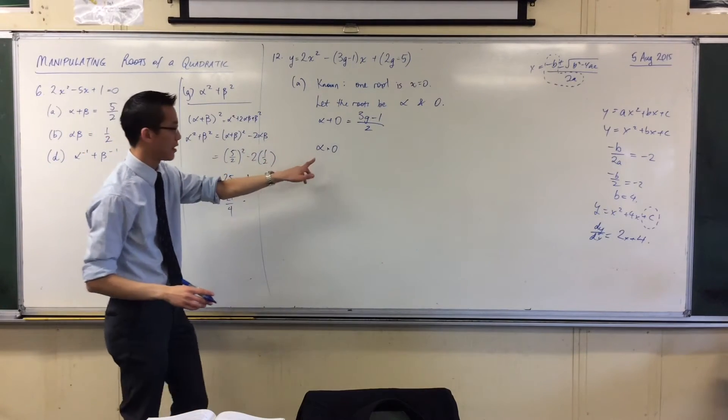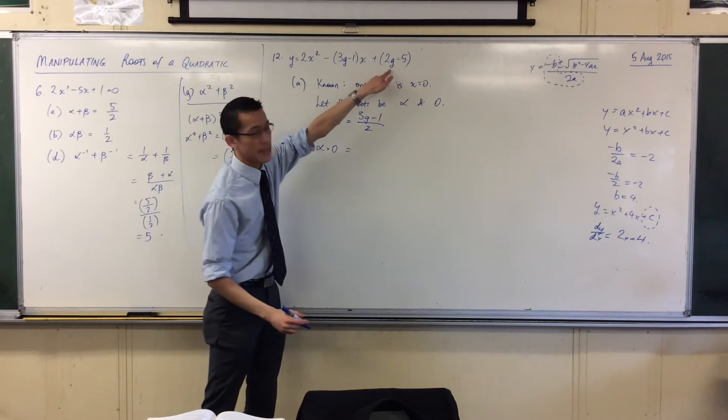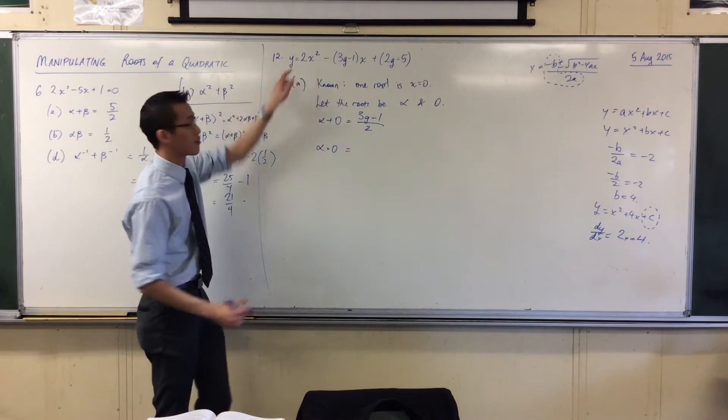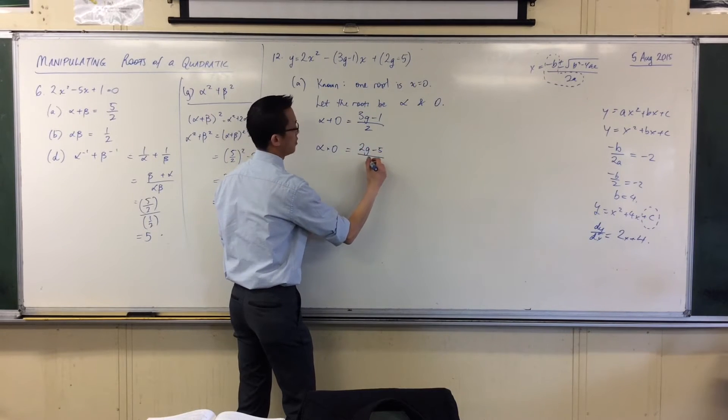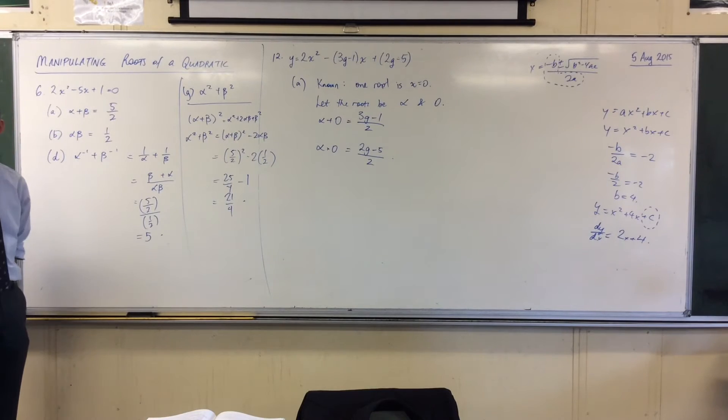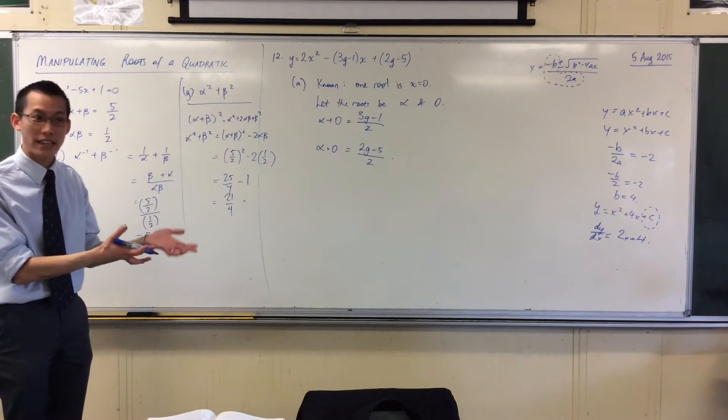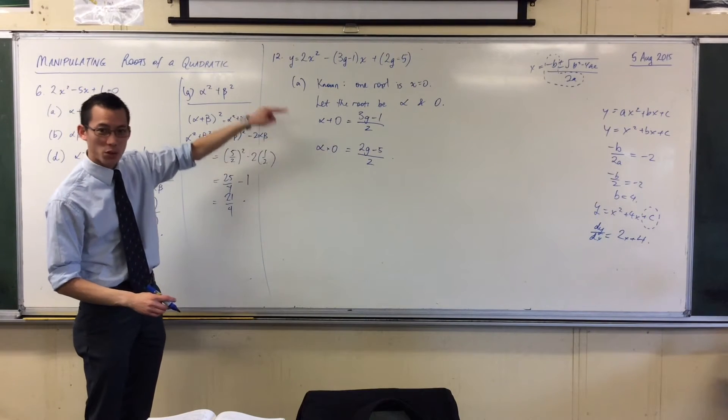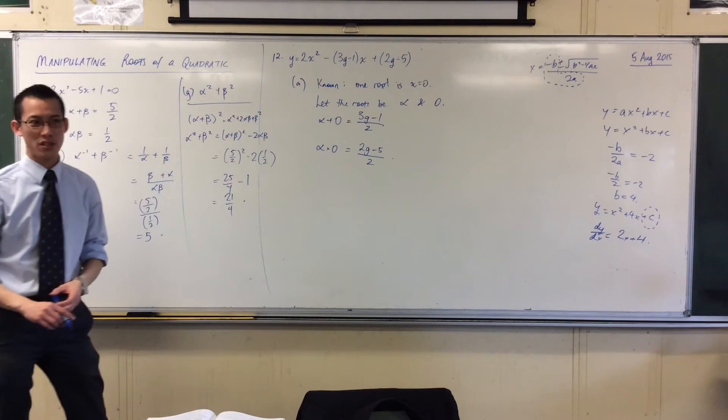So that's just alpha. Down here, the product of roots is c on a, so I've got 2g minus 5 on 2. So when you look at these, I just started off with the sum and product, because that's what I can calculate fairly easily, you can see that one of these is more useful than the other for working out what the value of g is, can you see?